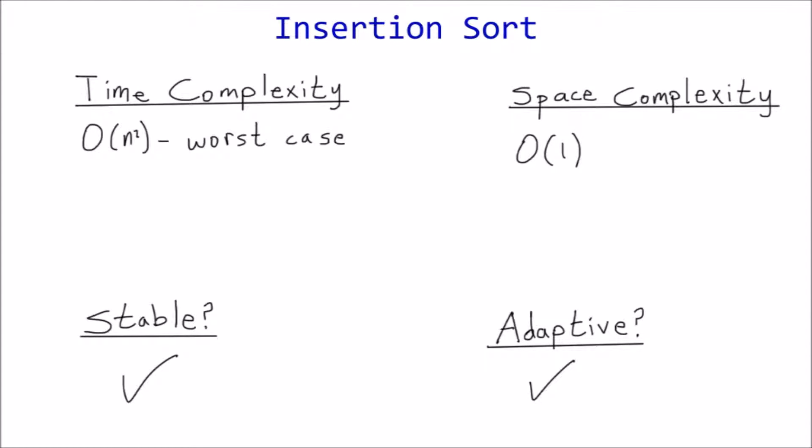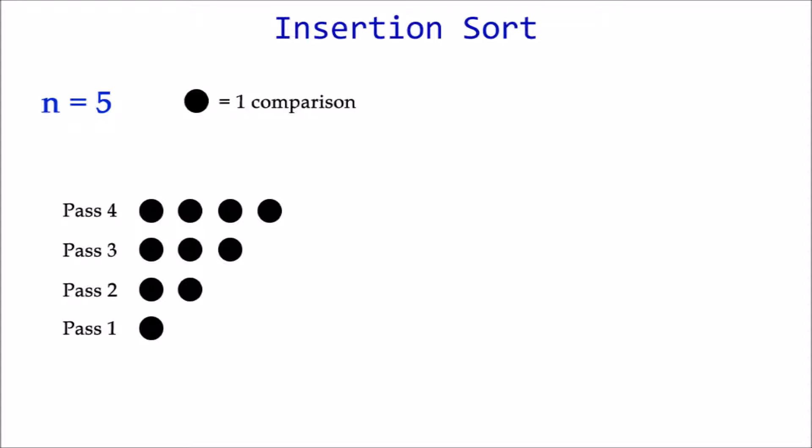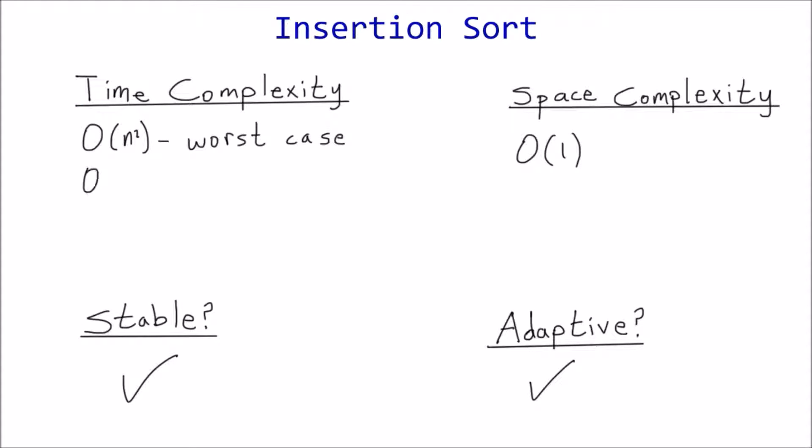Now for best case. The best case scenario occurs when the list is already sorted. In that case, only one comparison takes place in each pass, zero shifts. So that's n minus 1 comparisons in total. But again, we only care about the highest order term, which is n, so best case is big O of n.